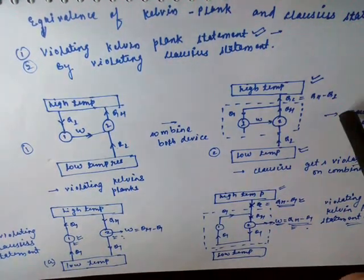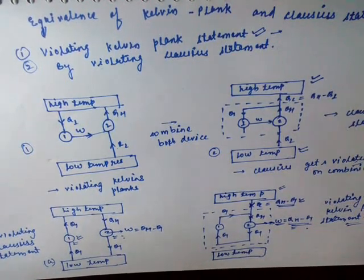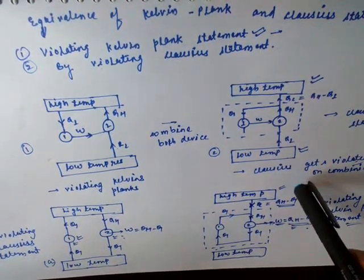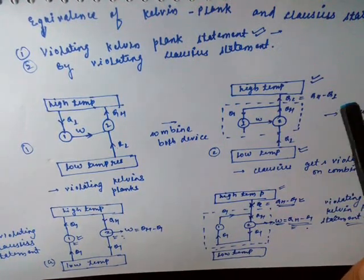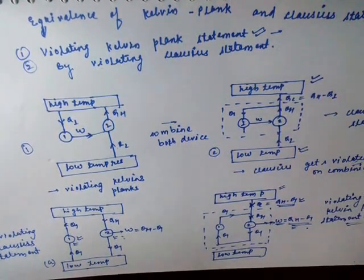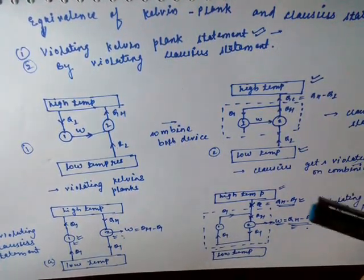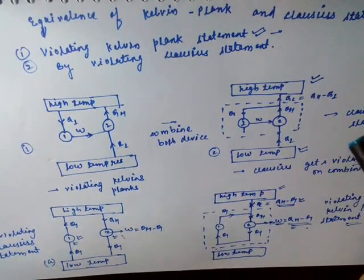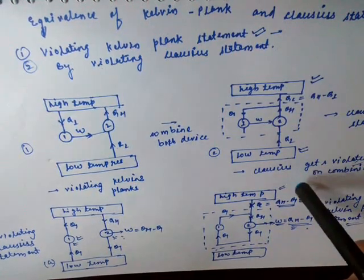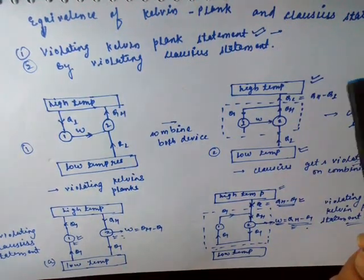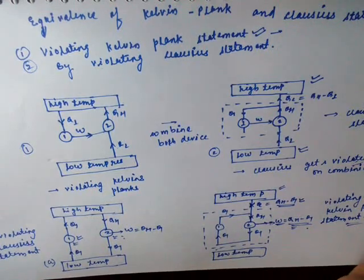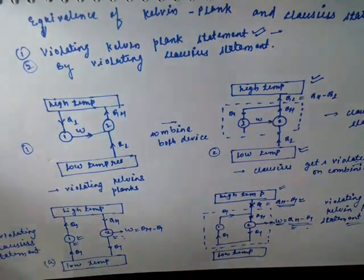Violation of each statement makes the violation of the other statement. So from these two cases, we can say that the violation of one statement makes the violation of the other, which means they are equivalent to each other. Hence, the Kelvin-Planck statement and the Clausius statement — both statements of the second law of thermodynamics — are totally equivalent.